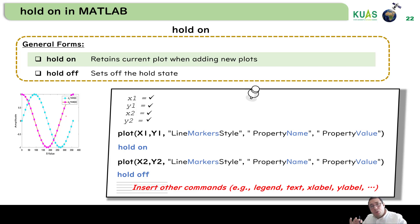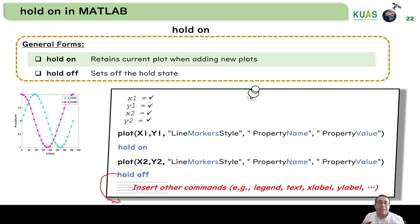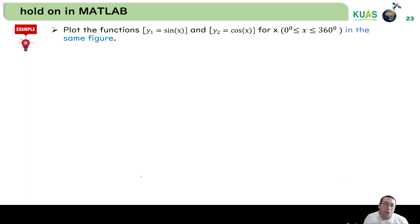After hold on and hold off, you can add more elements such as legend, text, x label, and y label. You can insert x label, y label, legend, title, and text annotations after the hold off section. The order doesn't matter — hold off can come before or after the labels and they will be applied to the figure correctly. For example, let's plot y1 = sin(x) and y2 = cos(x) for x from 0 to 360 degrees with no special format needed.